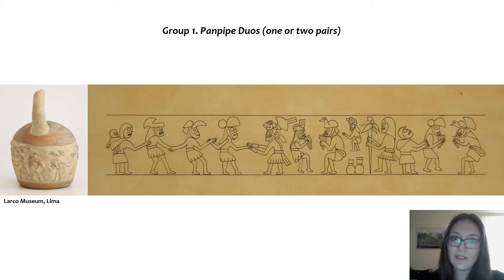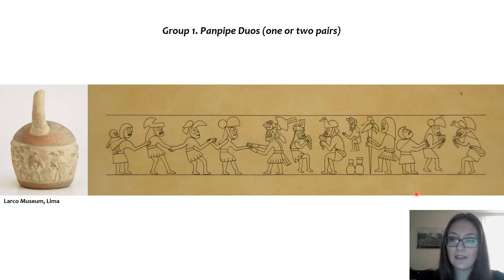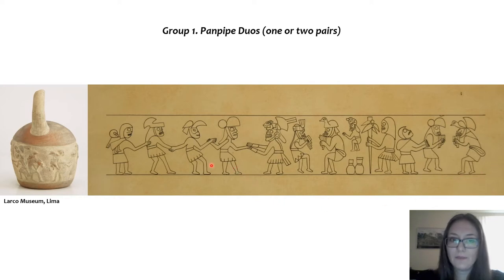The first group is the pan pipe duos. Here we can see a bottle from the Larco Museum and a rollout that the Larco Museum provided to me, made by one of the artists of the museum. We can see pan pipe duos, with other characters dancing, women carrying babies, and this character who also appears in other scenes carrying a manioc plant.